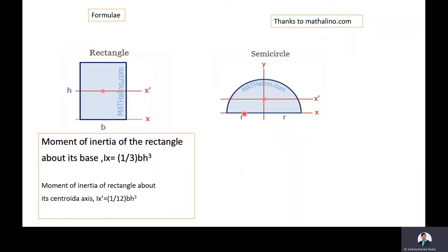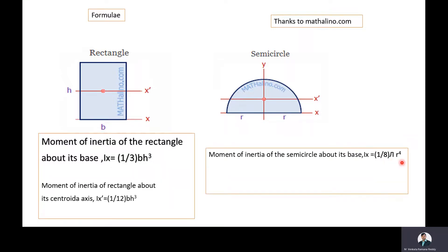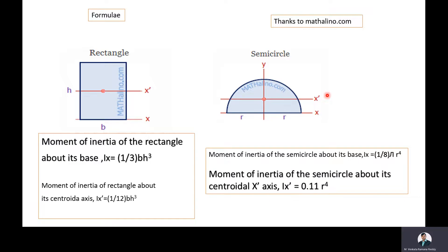The moment of inertia of a semicircle about its base x-axis is ix = (1/8)πr⁴, where r is the radius of the semicircle. And the moment of inertia of the semicircle about its own centroidal x-axis is 0.11r⁴. In the present problem, we are going to use the second formula.